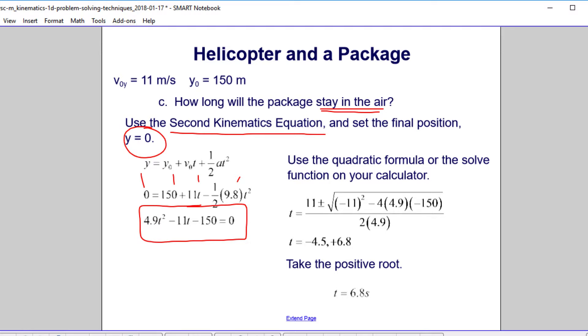Of course, you can't do that on the AP test so you're limited to this or your calculator. We get two roots. We'll take the positive root because we're moving in positive time. And the package will take 6.8 seconds before it hits the ground.